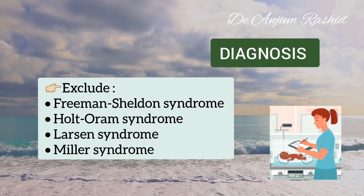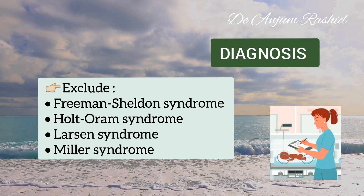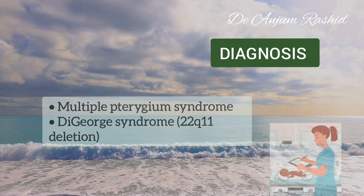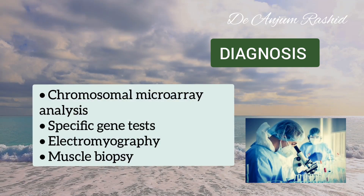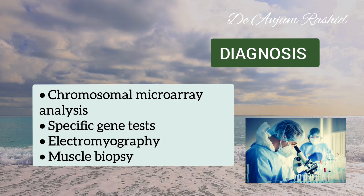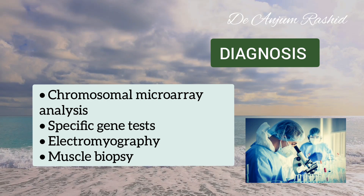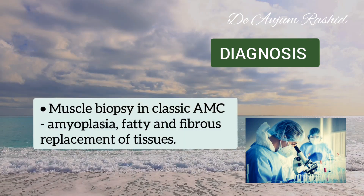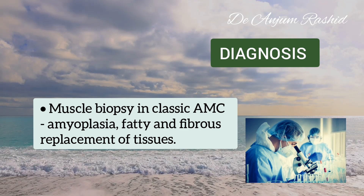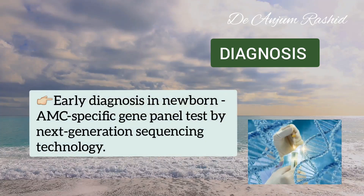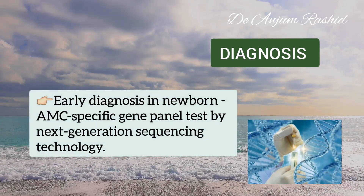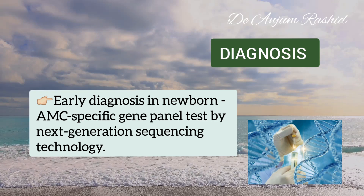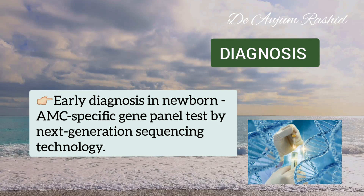Specific disorders to be sought include Freeman-Sheldon syndrome, Holt-Oram syndrome, Larsen syndrome, Miller syndrome, Multiple Pterygium syndrome, and DiGeorge syndrome. Testing typically starts with a chromosomal microarray analysis followed by specific gene tests. Electromyography and muscle biopsy are useful to diagnose neuropathic and myopathic disorders. In classic AMC, muscle biopsy typically shows amyoplasia with fatty and fibrous replacement of the tissues. Early diagnosis can be made by clinical evaluation and an AMC-specific gene panel test using next-generation sequencing technology, which can establish a definitive etiology in about 68% of cases.